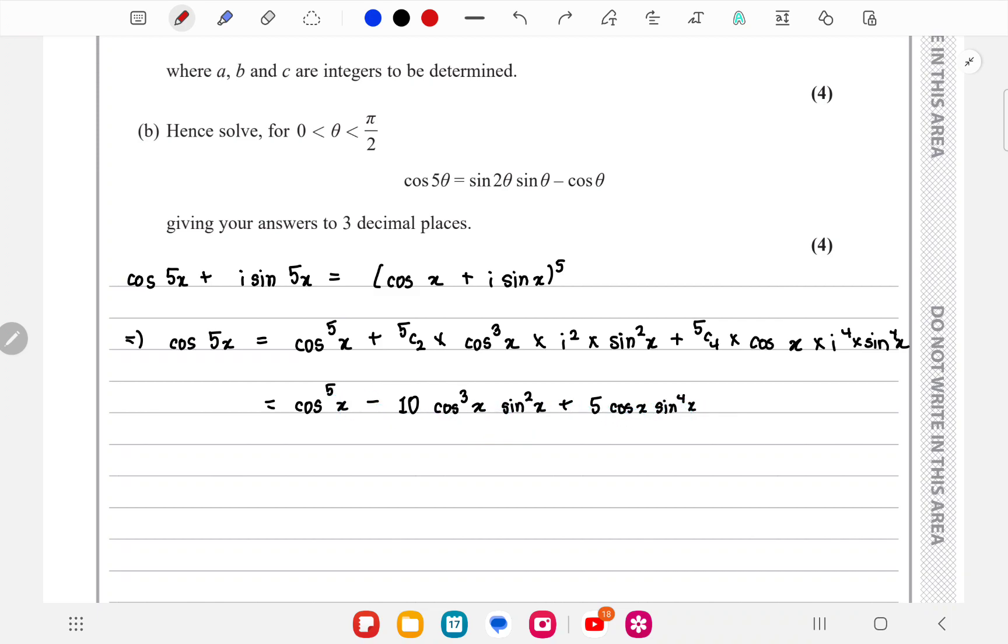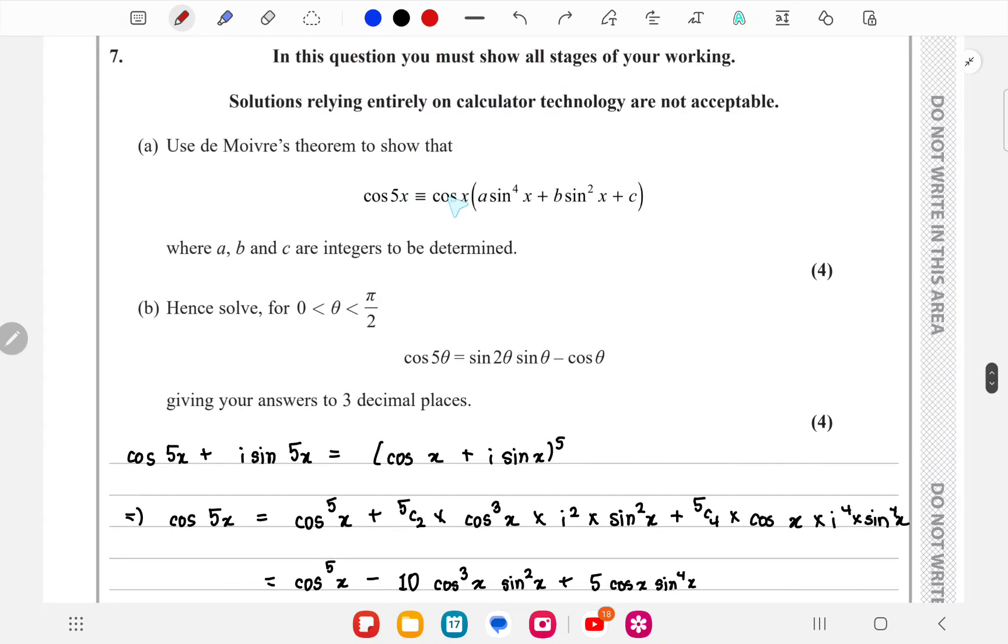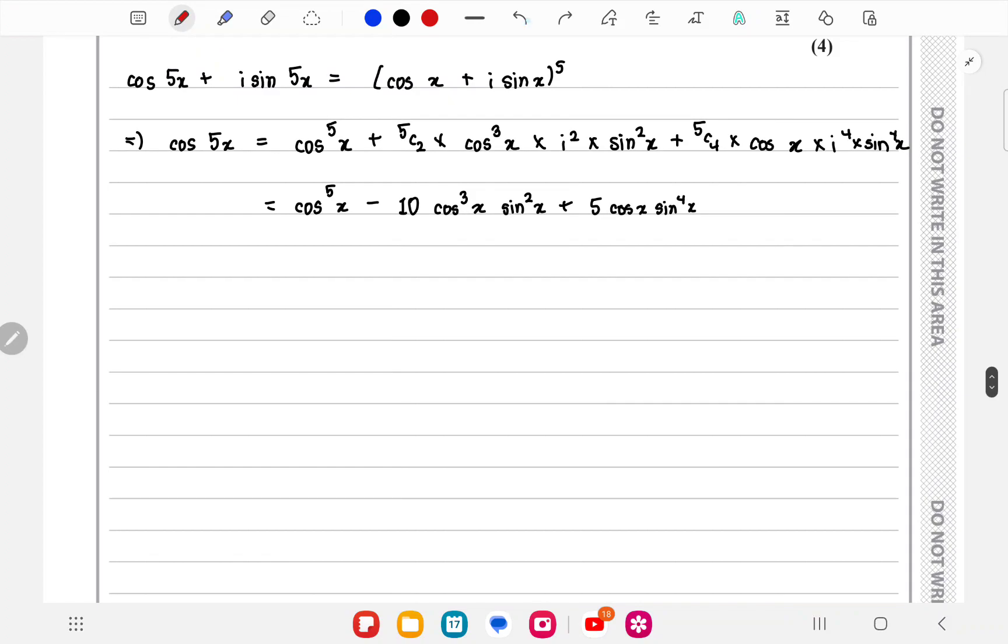So this is the real part. Now we have to show in this form with cos x outside, so we'll do that same over here. Take cos x outside. Now if we take cos x out, it will be left with cos to the power 4x.